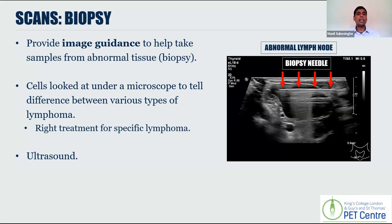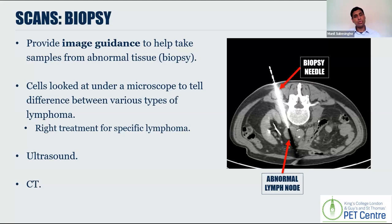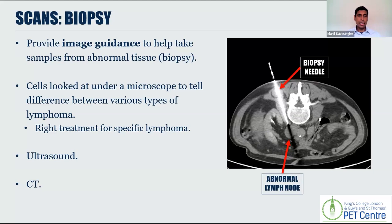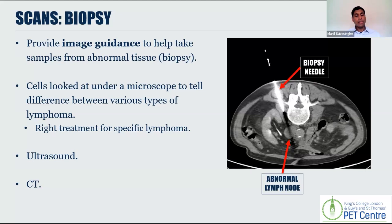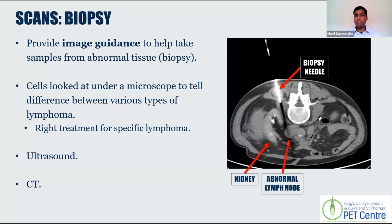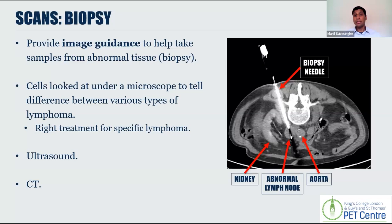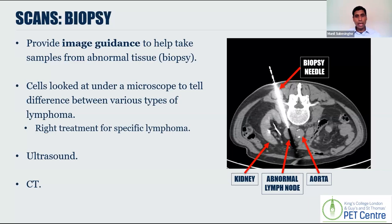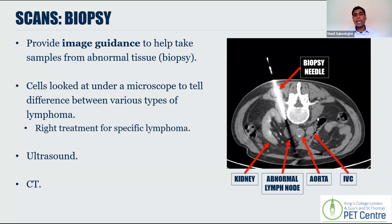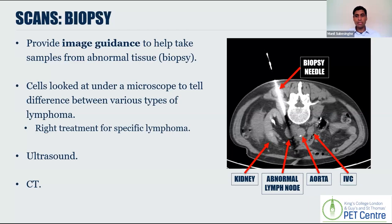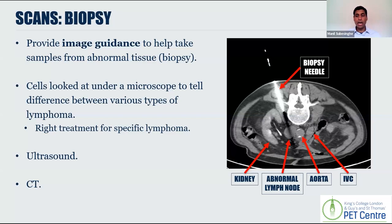Ultrasound is ideally suited for taking samples from superficial structures — things close to the skin surface, like the neck, the armpits, and the groins. But in some instances lymphoma doesn't involve those sites, so we may need another imaging type. This CT scan shows a needle being slowly progressed to take a sample of tissue from a lymph node lying deep within the abdomen. You can see that the kidney and major blood vessels — including the aorta and the inferior vena cava — are very close to the needle. Imaging guidance really helps ensure we get the best sample for diagnosis while minimizing potential complications.